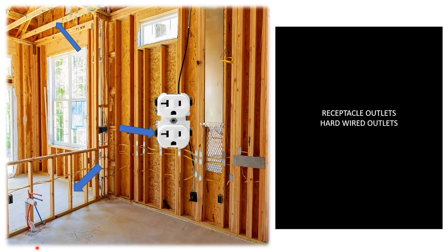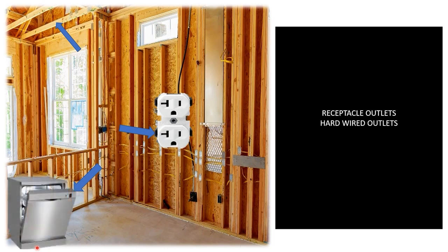The second type of outlets are hardwired outlets. A good example here is going to be the dishwasher. They've stubbed out this wire right here, so hopefully the drywallers and cabinet guys remember to poke it through the back — that way it doesn't get lost in the wall — and they're going to hardwire a dishwasher. So this is a hardwired outlet.